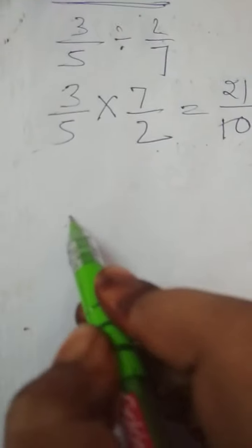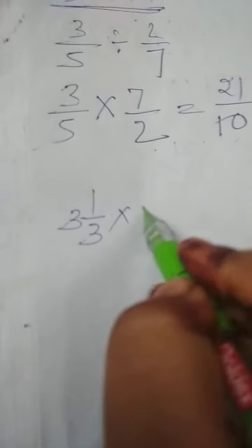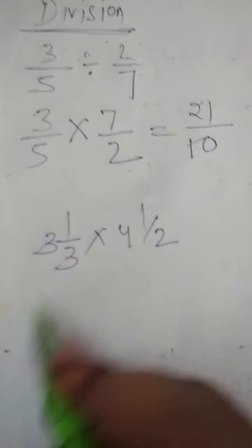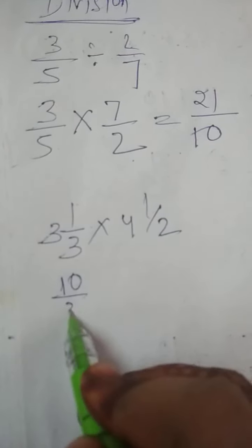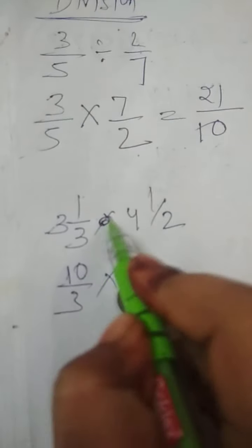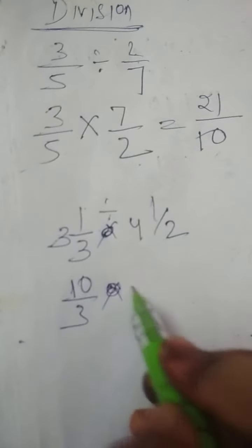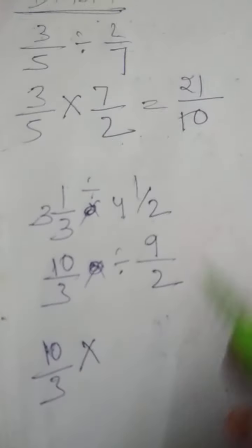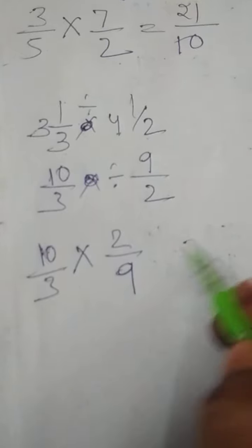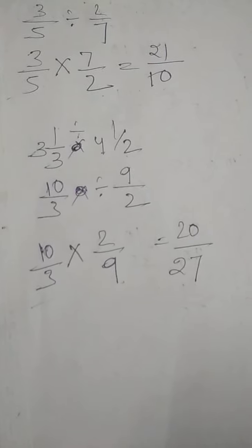We will take more example. If the question is given in mixed fraction, first you have to convert into improper fraction. For 3 whole 1 by 3: 3 into 3 is 9, plus 1 is 10, so 10 by 3. For 2 whole 1 by 2: 4 into 2 is 8, plus 1 is 9, so 9 by 2. First one remains the same, multiply, second one will be reciprocal. Then 10 into 2 is 20, and 9 into 3 is 27. Understood the process of division?